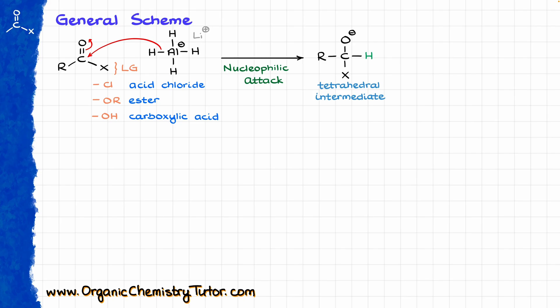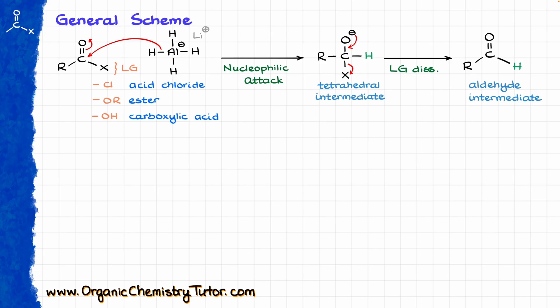As the result of this nucleophilic attack, I am going to get the corresponding tetrahedral intermediate, and that tetrahedral intermediate is going to immediately lose our leaving group by pushing the electrons back onto the carbon and kicking the X out, which is going to give us the aldehyde intermediate. And since we are still in the presence of the reducing agent, our lithium aluminum hydride, I'm going to bring my aldehyde and lithium aluminum hydride back and do another nucleophilic attack from my hydride onto my carbonyl.